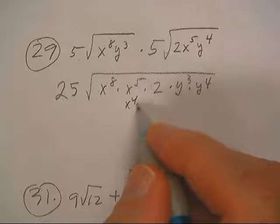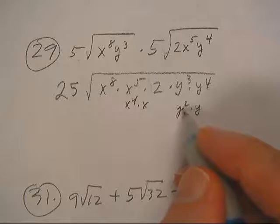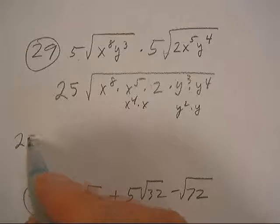Well, this is x to the 4 times x, this is y squared times y, so I'm going to have the 25 out here.